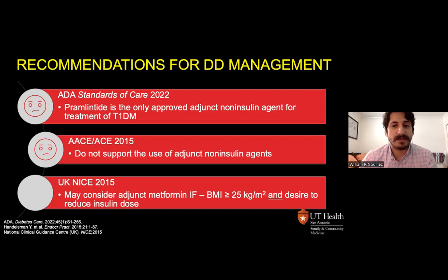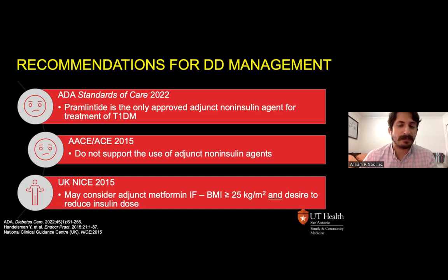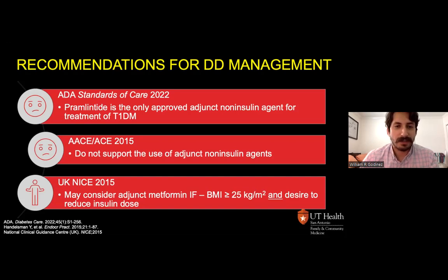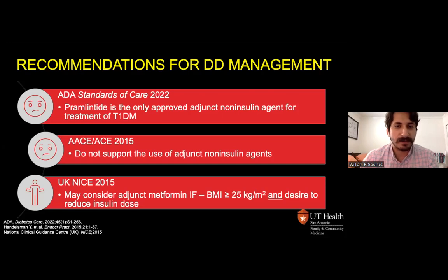The UK NICE 2015 guidelines state one may consider metformin as adjunctive insulin therapy if the patient has a BMI ≥25 and there's a desire to improve glycemic control while reducing insulin dose. There isn't really clear-cut clinical guidance on the use of insulin sensitizers. As practitioners, isn't our end goal to decrease insulin requirements while also improving glycemic control?